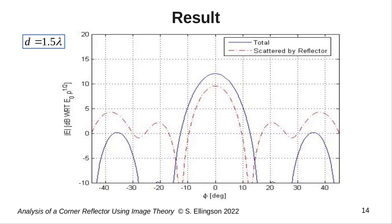This plot shows the total far field magnitude in blue. Here I have chosen the distance d to be 1.5 wavelengths. This is a bit larger than the values typically used for corner reflectors, which are usually closer to 0.5 wavelengths. But this analysis also works for those smaller spacings. There's also a red curve on this plot, and let's just ignore that for a moment.